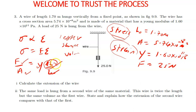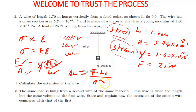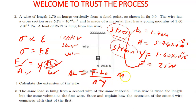The extension is the change in length. Making it the subject of the formula, change in length equals force multiplied by original length, divided by area multiplied by Young's modulus. All values have been given in their standard units, so you just plug them into the formula to find the answer in meters.